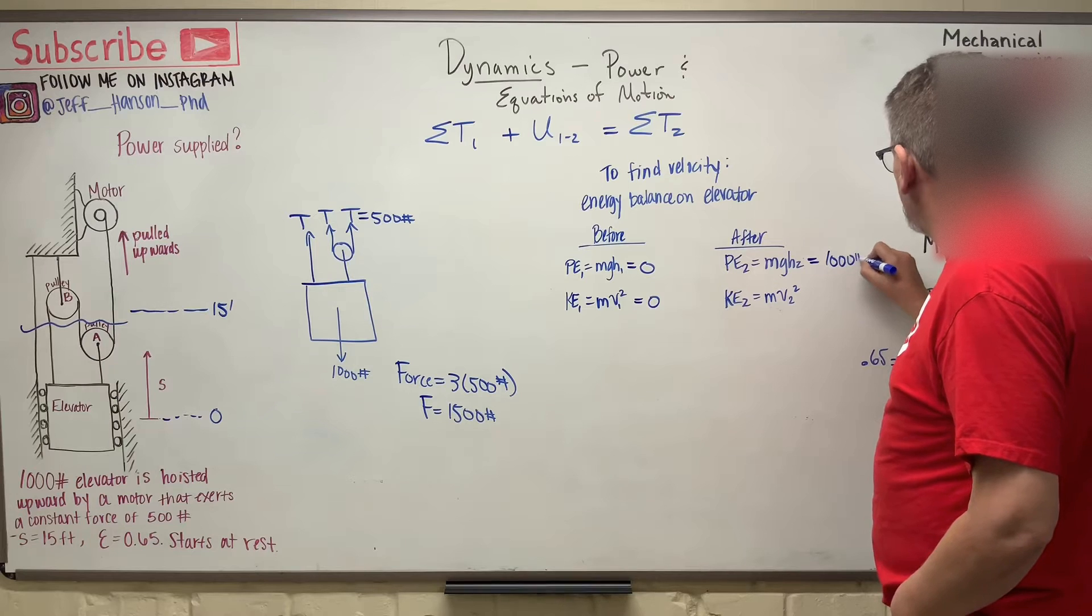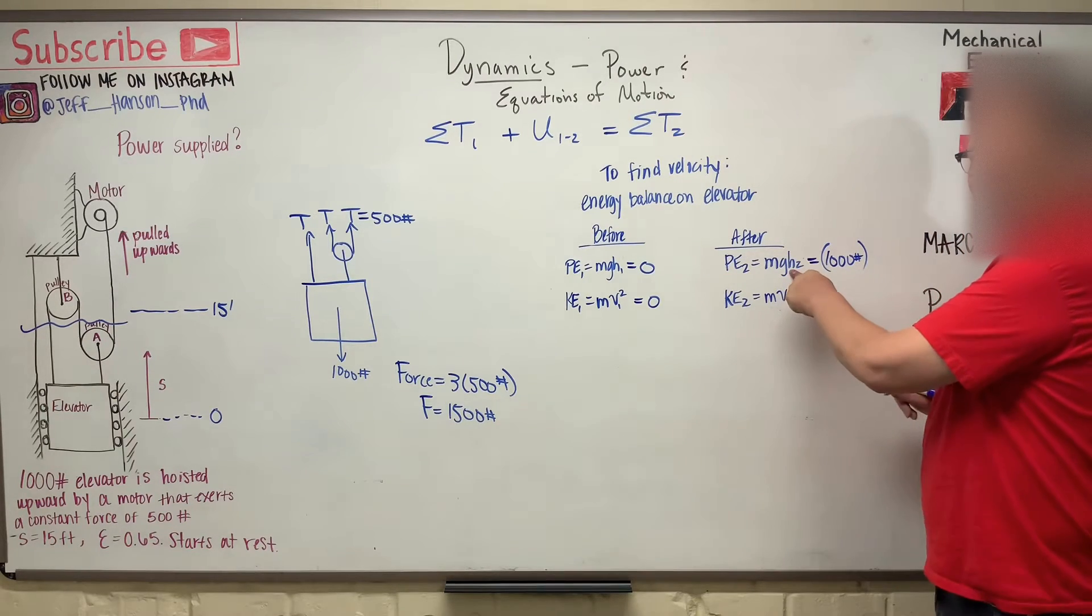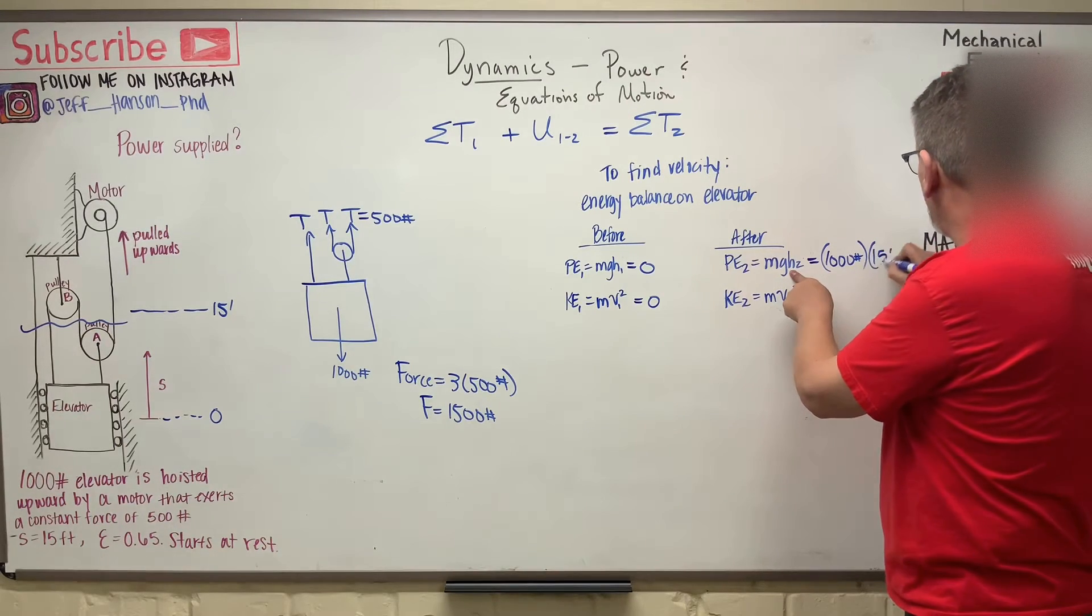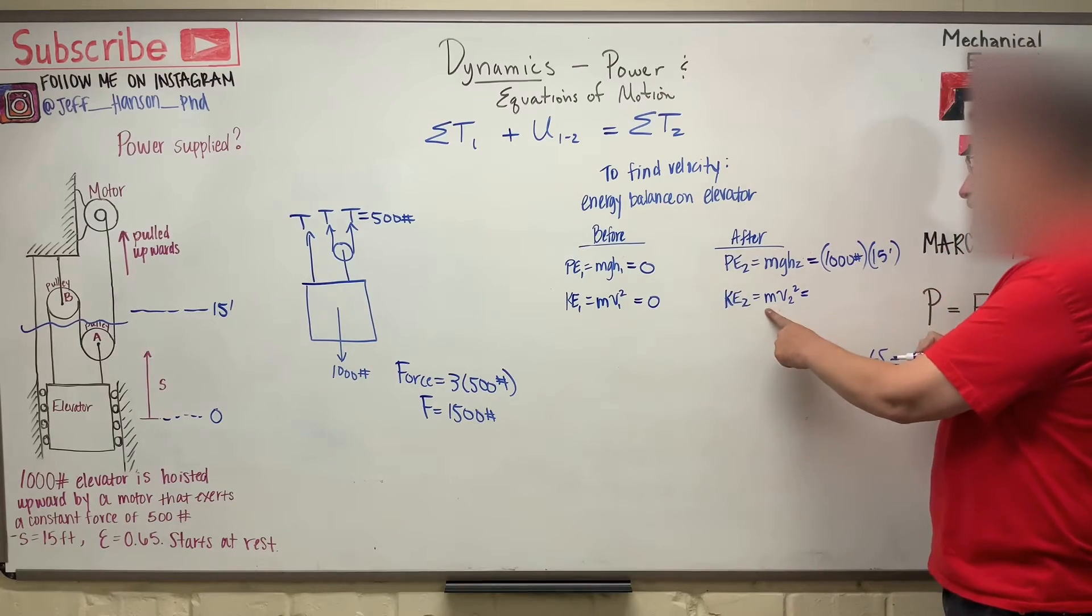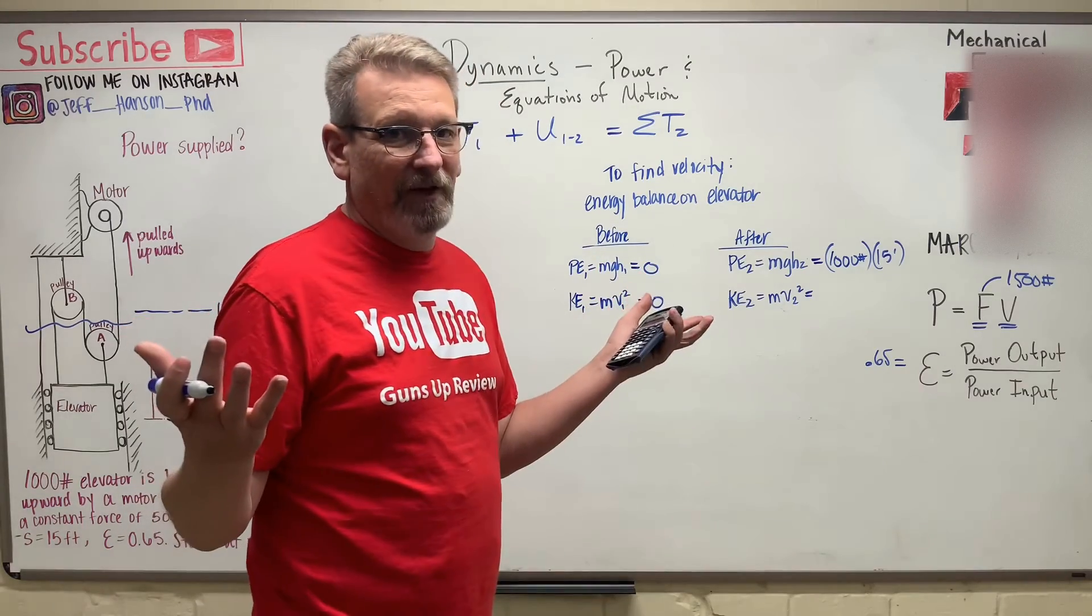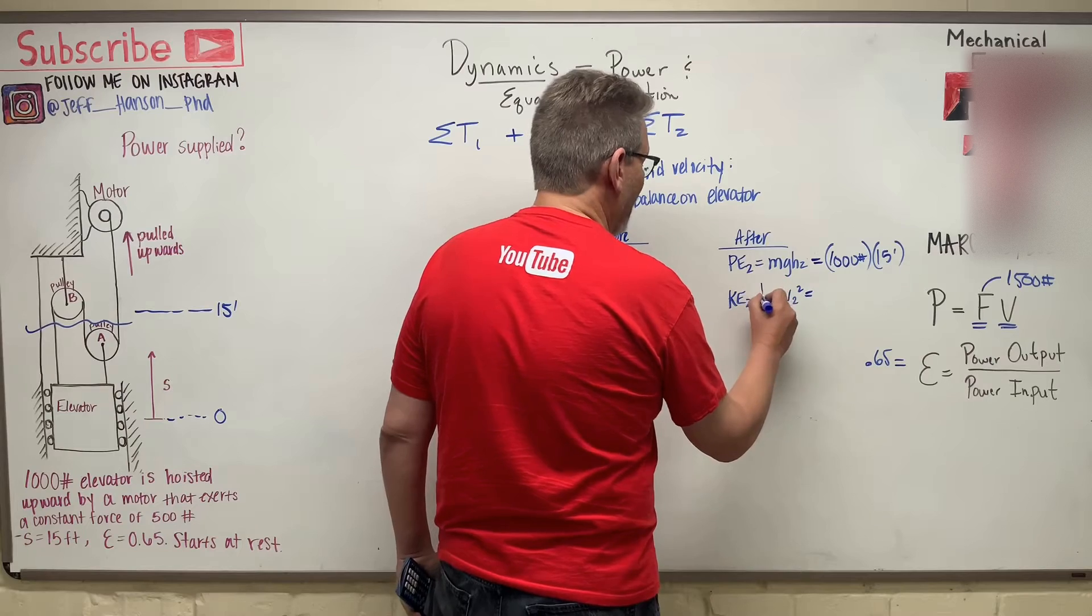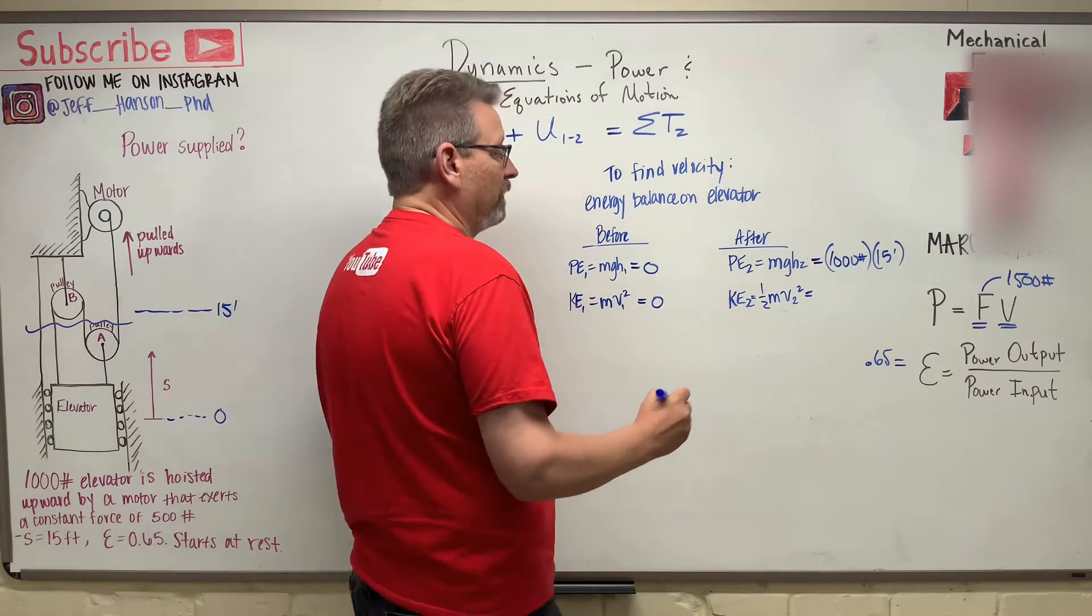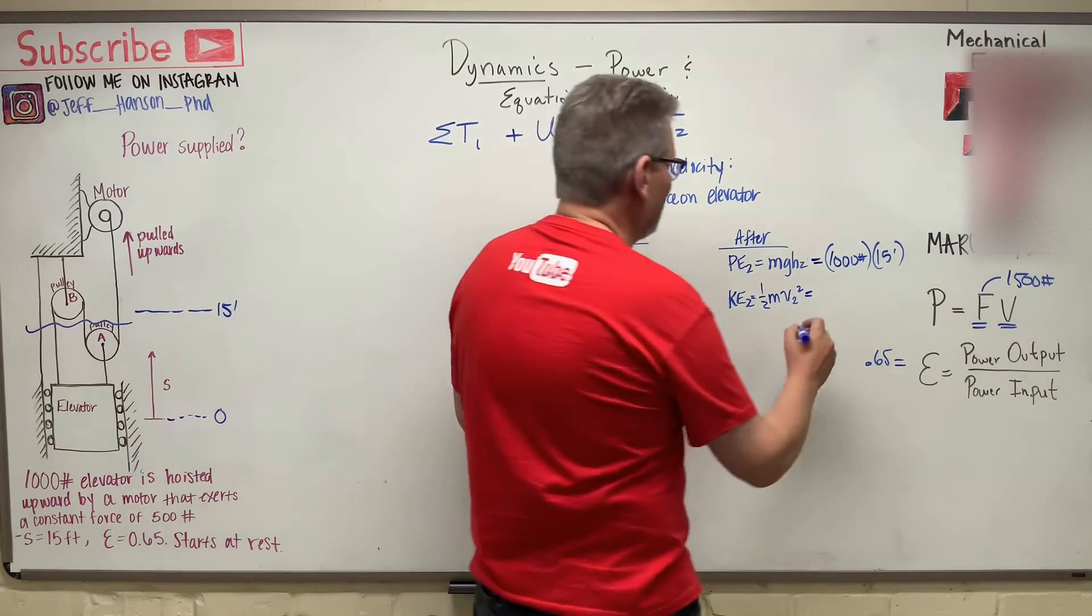And we're going to raise that 1,000 pounds, what height? The height number two, 15 feet. And then in the kinetic energy for point number two, the equation is wrong. What's wrong with that? Y'all help me out here. That's not right, is it? It has a one-half in front of it. It's one-half mv squared, not just mv squared. Boy, that was close. There's so many places to mess this up.